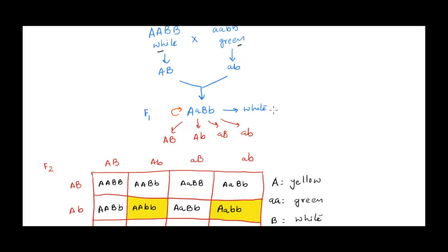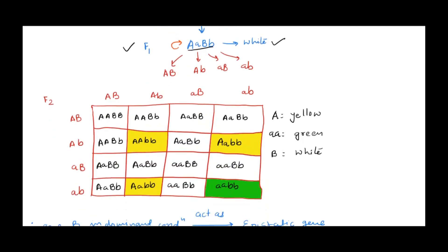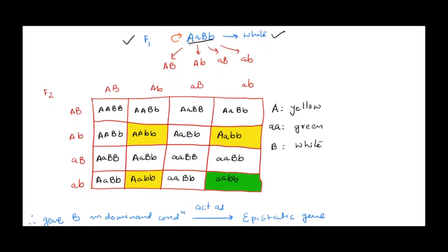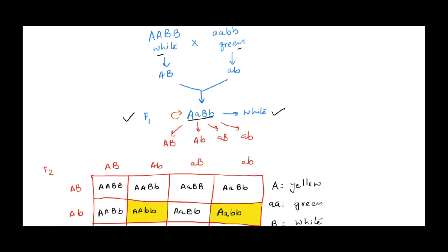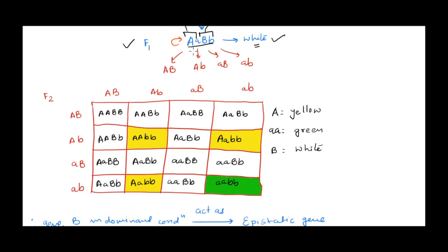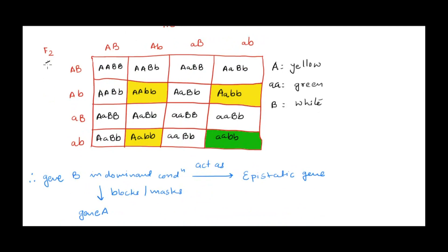In the F1 generation, we get white fruit with genotype capital A small a, capital B small b. Even though capital A is present — which should code for yellow — the epistatic gene B is in heterozygous dominant condition, so it does not allow the color to be expressed and all fruits are white. The gametes from F1 are: capital A capital B, capital A small b, small a capital B, and small a small b.